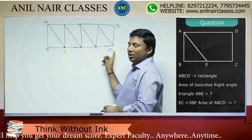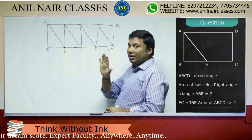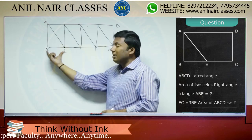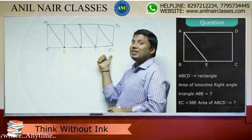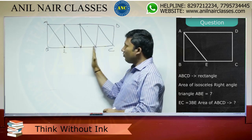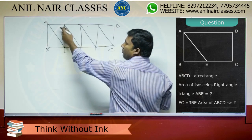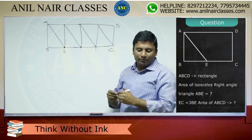Step number 1: EC is 3 times BE. If BE is 1 unit, what is EC? 3 units — 1, 1, 1, 1. At these points, I dropped a perpendicular. Paper folding.